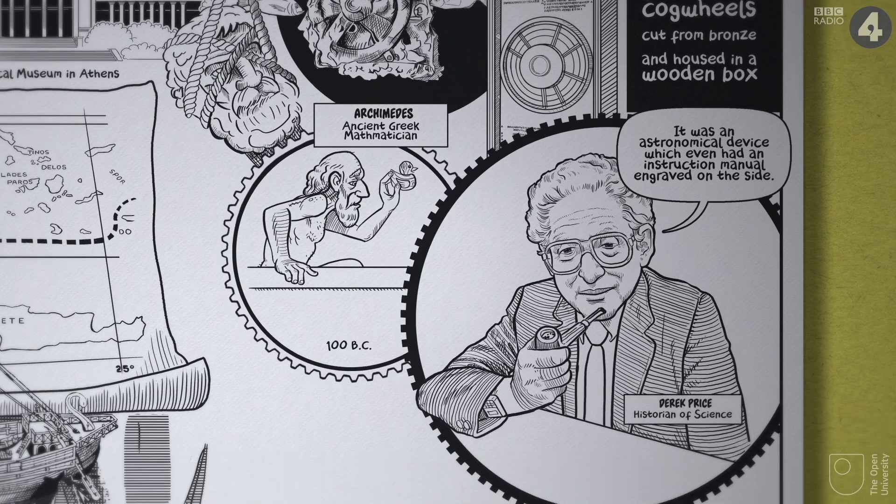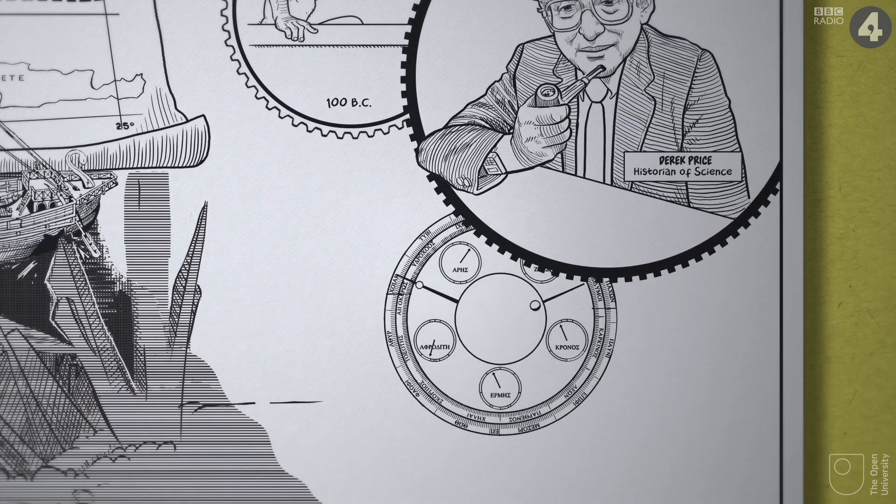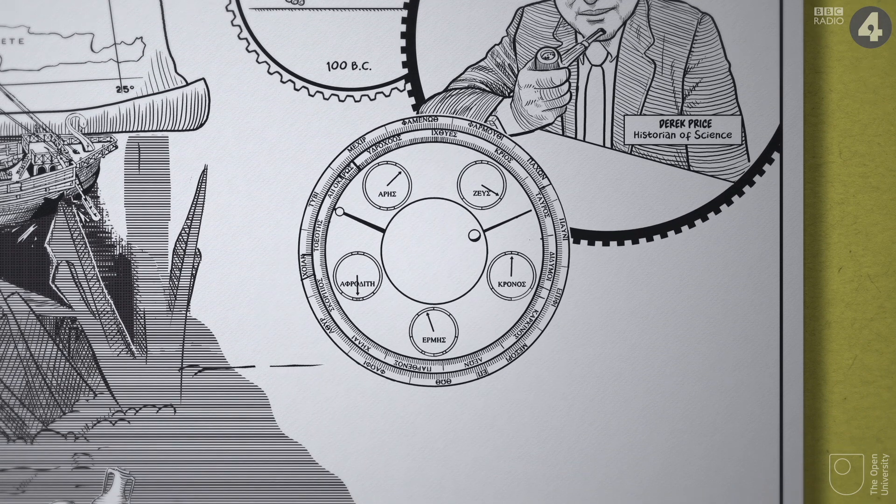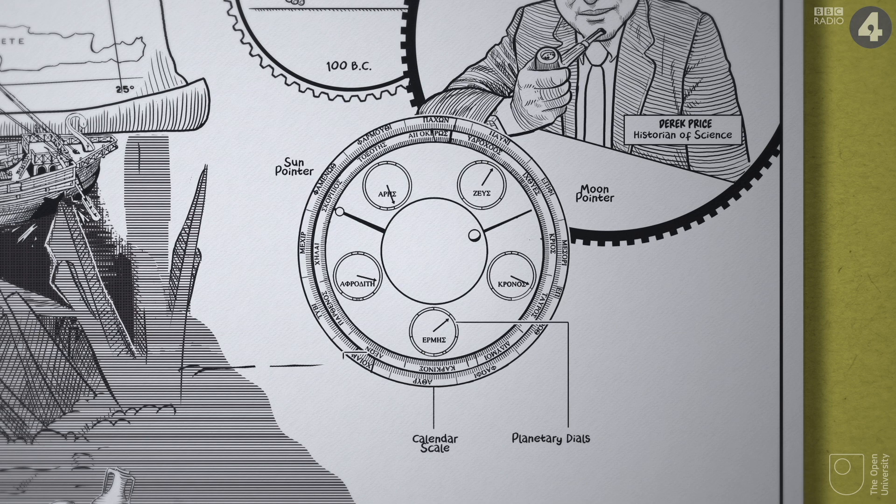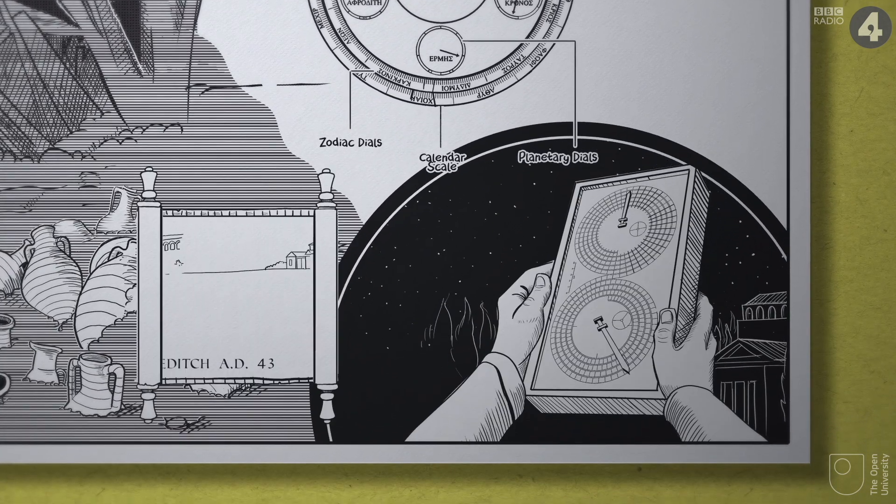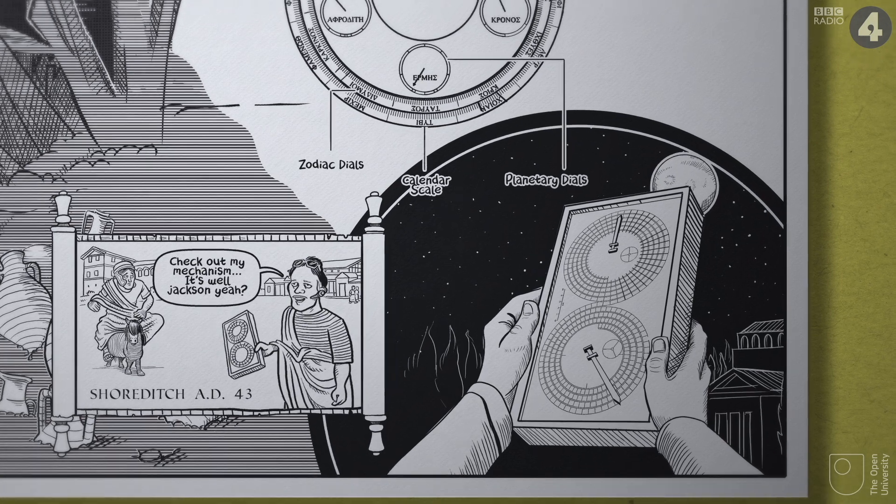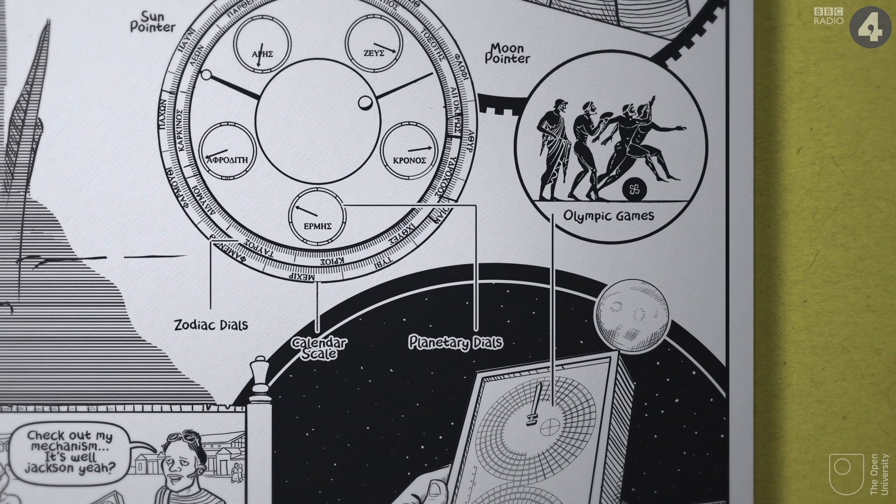Built around 100 BC, the Antikythera mechanism accurately predicted the relative positions of the Sun, the Moon and the known planets on any chosen date, a kind of analog computer. It even signaled dates when the Olympic Games fell.